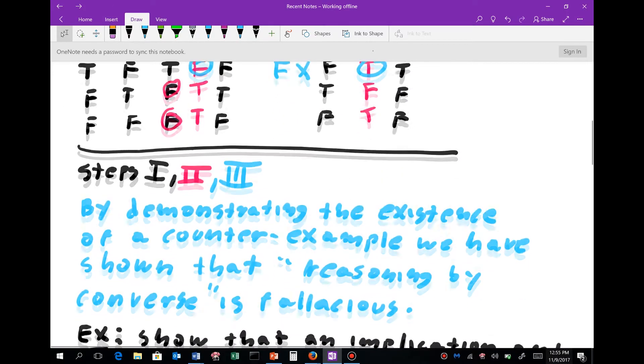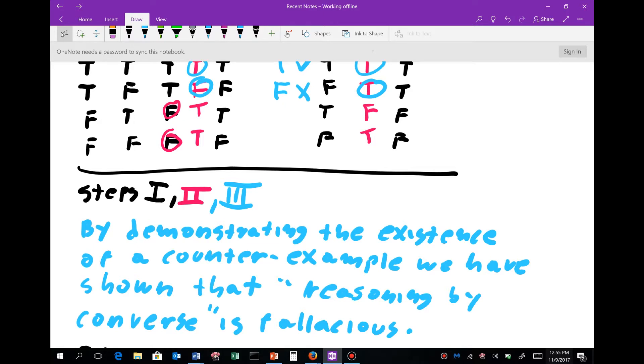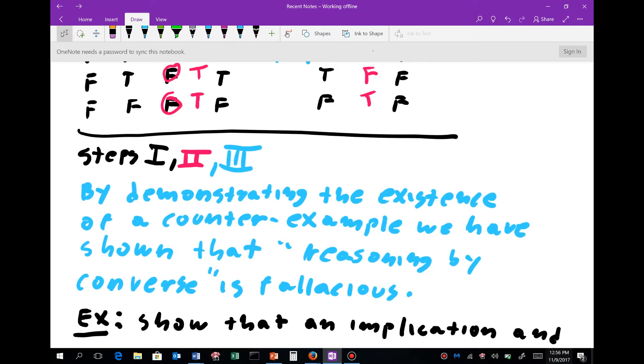So if you want to get full credit on this, if it was an examination question, you would follow this by writing: By demonstrating the existence of a counterexample, we have shown that reasoning by converse is fallacious. And that is the end of the proof. Some people end a proof with a little rectangle that they fill in. This is called Halmos's rectangle. He was a mathematician—pretty famous, important, illustrious mathematician.